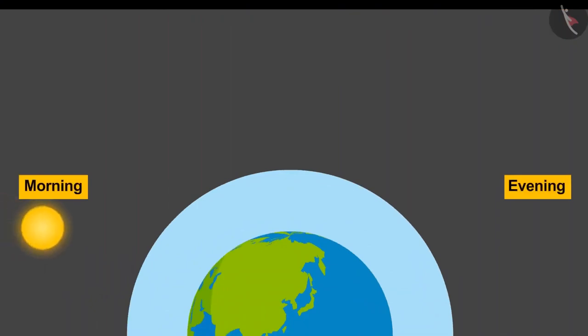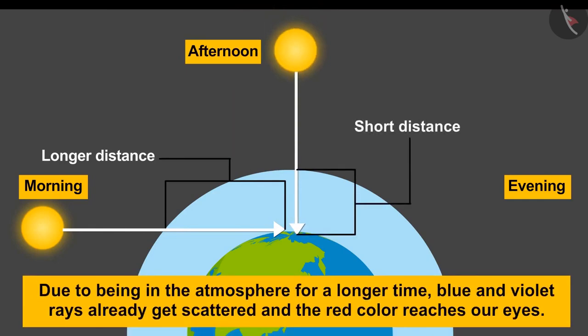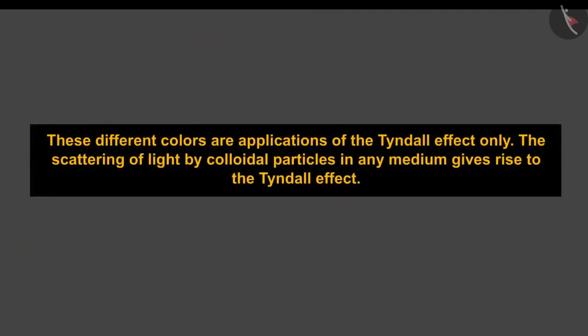If you look at the time of morning and evening, then it can be seen that the sun is near the horizon and the light coming from the sun travels in the atmosphere for a longer time, while in the afternoon this distance decreases. Due to being in atmosphere for a longer time, blue and violet rays already get scattered, and the red color reaches our eyes. These different colors are applications of Tyndall effect only.